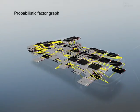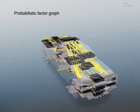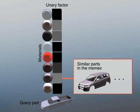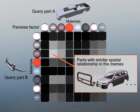This information is employed to create a probabilistic factor graph to infer the materials of the query object. Here we see a unary factor for a part of the query object. We receive high unary values if there are similar parts with similar materials in the Memex database. There are also pairwise factors that capture spatial relationships between parts that are in contact, as we show here for the body and the bumper of this car. We receive high values if there are parts with a similar spatial relationship and similar materials in the Memex database.